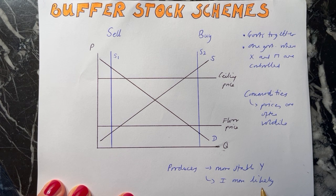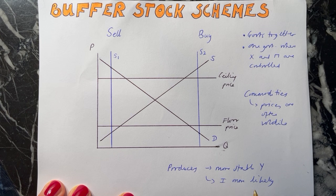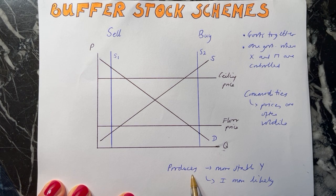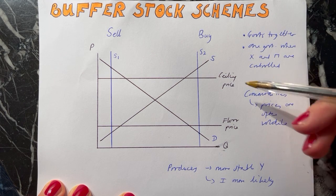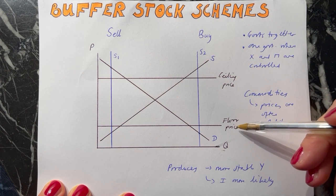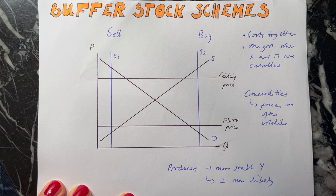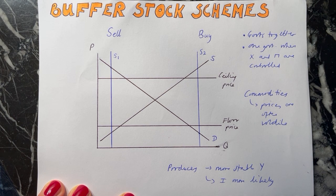If firms know that the price won't suddenly be very high or very low for the product they're selling, they're more likely to invest. But mostly it is designed for the producers. The buffer stock scheme keeps the price between the ceiling price and the floor price. In another video I'll look at the good and bad things about a buffer stock scheme - how it can be beneficial, but also how it could go wrong.